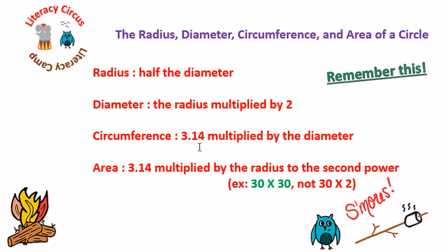The circumference is 3.14 multiplied by the diameter. The area is 3.14 multiplied by the radius to the second power. An example would be 30 times 30, not 30 times 2, which is a common mistake that will make your answer wrong every time.